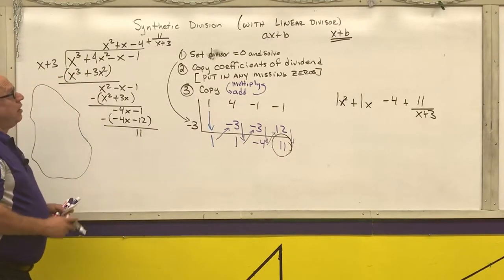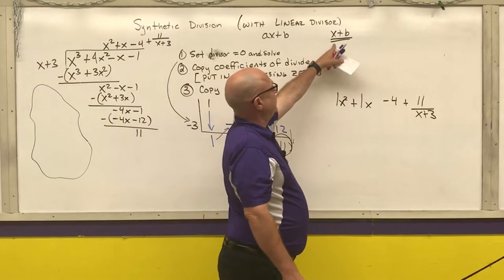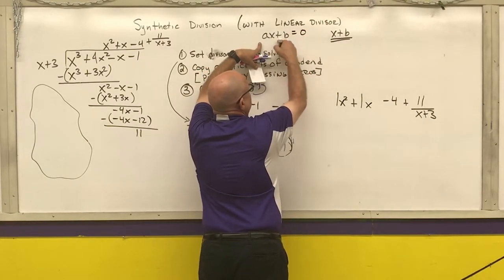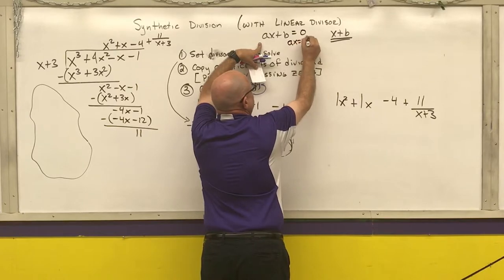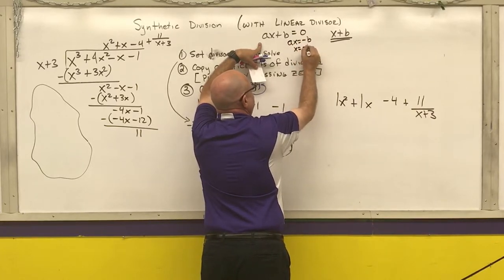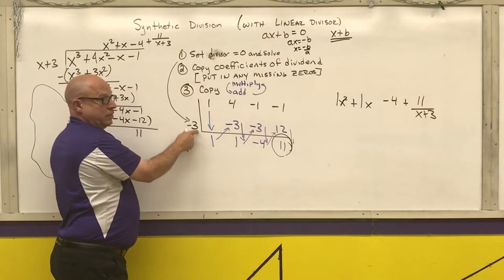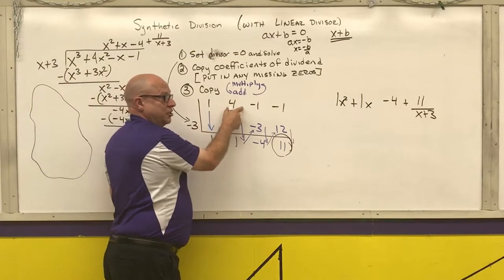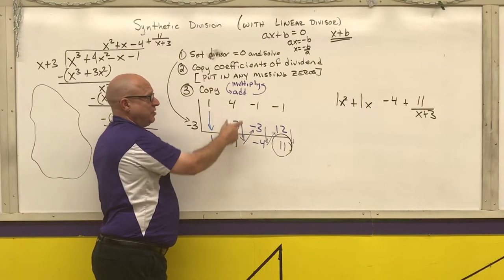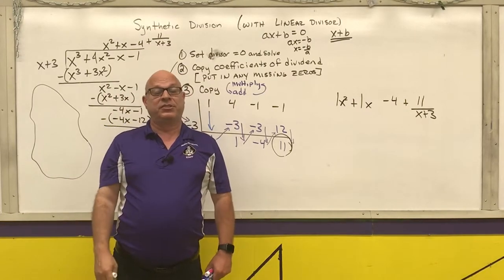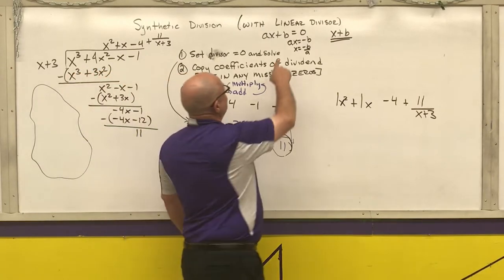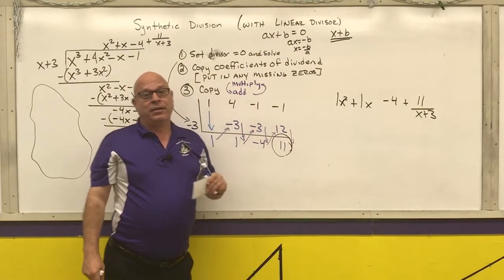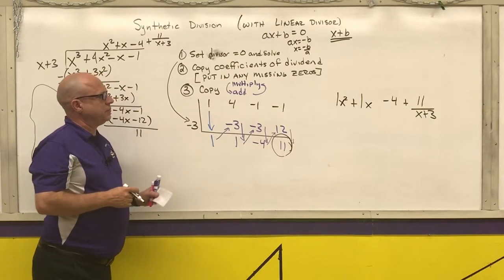The reason why it's best if it's only x plus a number or x minus a number is: if I set ax plus b equal to zero and solve, I get x equals negative b over a — that's the number you put out in front. That means every time you multiply, you're multiplying by a fraction, and you'd have to convert all the integers to fractions and then multiply by another fraction. So I would not do synthetic division if the coefficient a is present — there may be better methods.